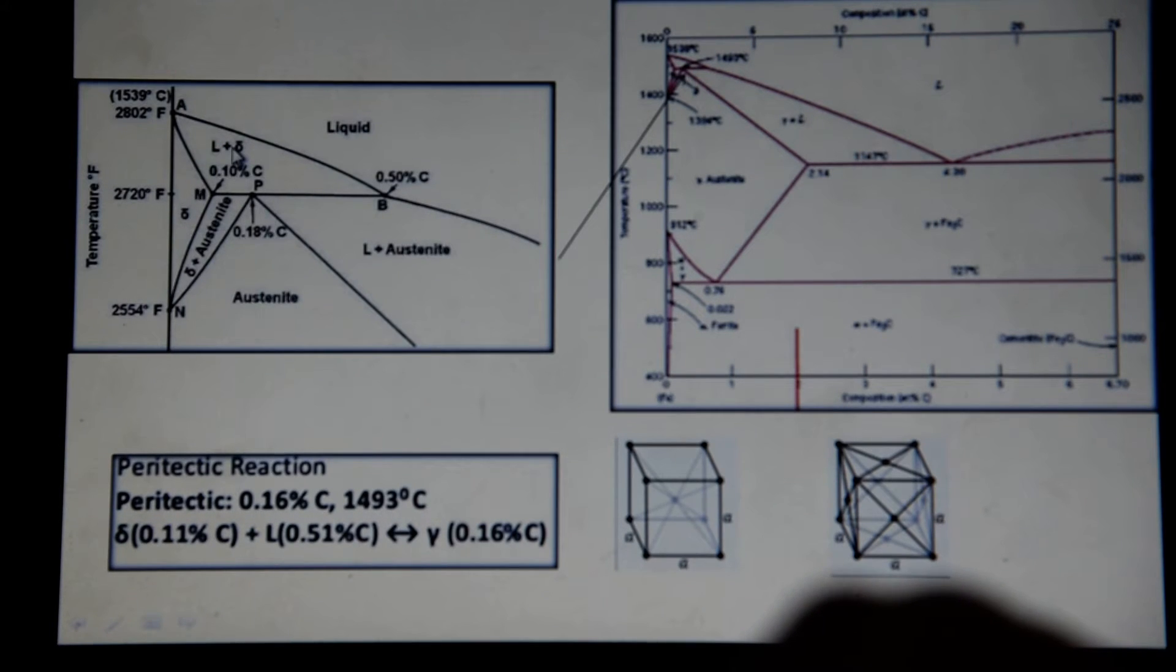You have the delta phase plus liquid, which at 0.16 weight percent of carbon and about 1,493 degrees Celsius, you will have liquid plus delta cooling down directly into the gamma phase, which is austenite.